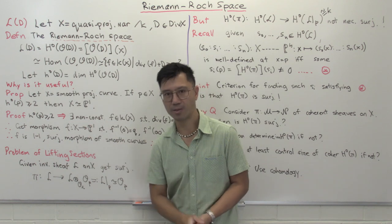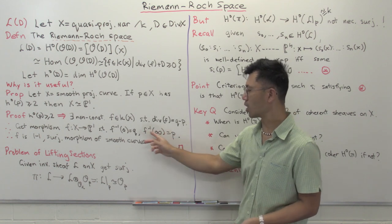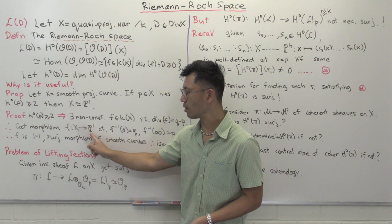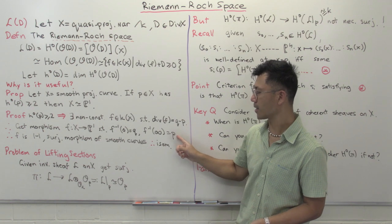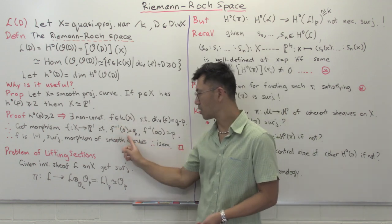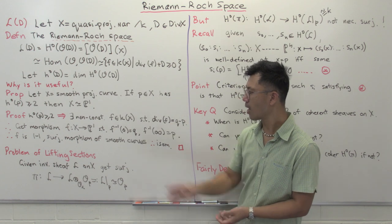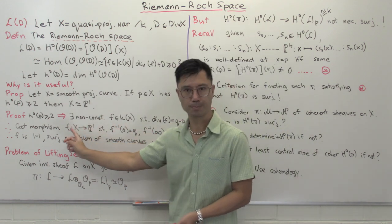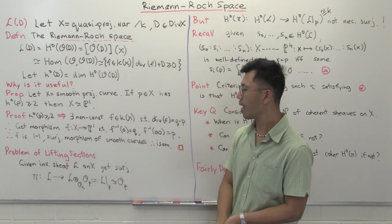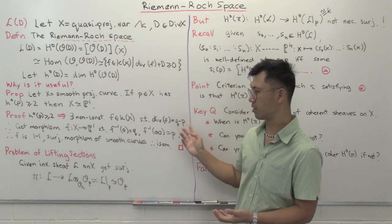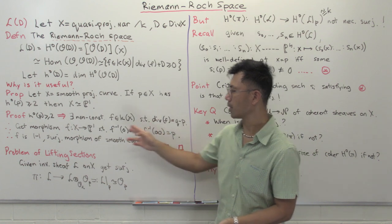A rational function can take values at infinity, but that value of infinity you can think of as a point on P¹, so this gives you a morphism from X to P¹. F has a single zero at Q and a single pole at P, so the inverse image of infinity is just P, and the inverse image of zero is just Q. More generally — and you can modify this argument by adding constants — the inverse image of any particular point is just a single point, so this function is one-to-one.